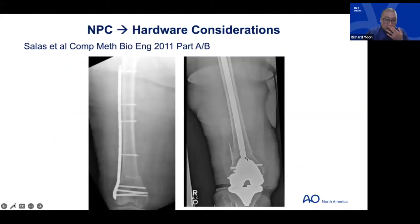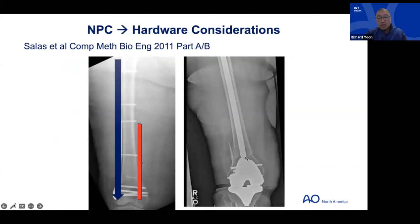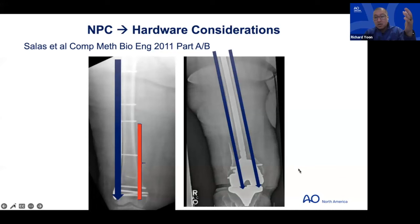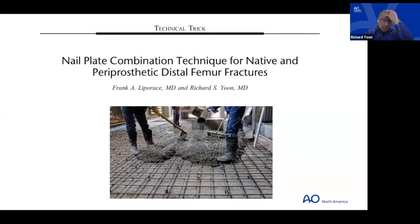Biomechanically, with an isolated lateral locked implant, stress concentration during weight bearing is centered around the proximal plate tip, and load along the mechanical axis is concentrated on the lateral side — the medial side sees much less stress. A nail is favorable because it's along the anatomic axis, so load sharing across the medial and lateral femur is more equivalent.